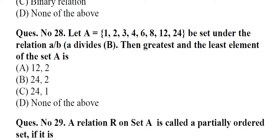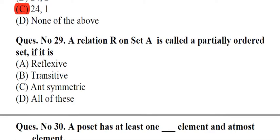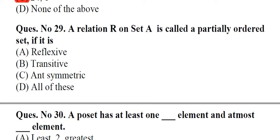Question number 28: Let A equals 1,2,3,4,6,8,12,24 be a set under the relation A divides B. Then greatest and the least element of the set A is A. 12,2, B. 24,2, C. 24,1, D. None of the above. Answer: C, 24,1. Question number 29: A relation on set A is called a partially ordered set if it is A. Reflexive, B. Transitive, C. Anti-symmetric, D. All of these. Answer: D, All of these.